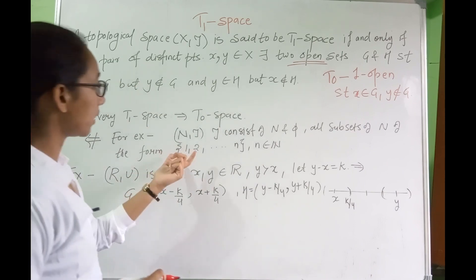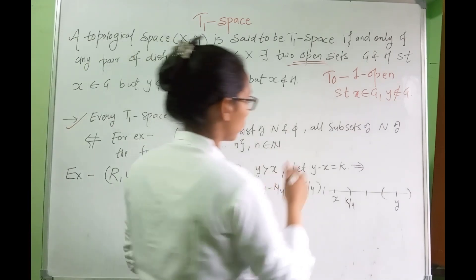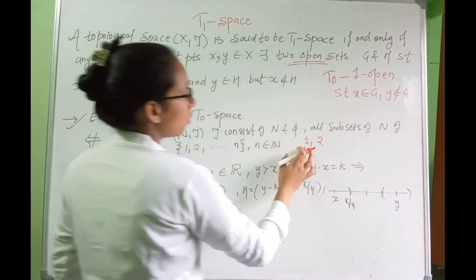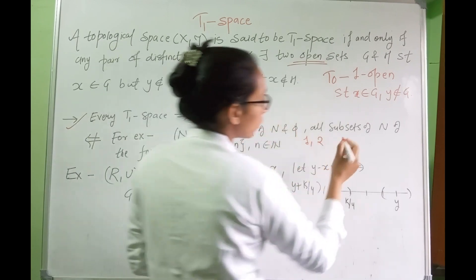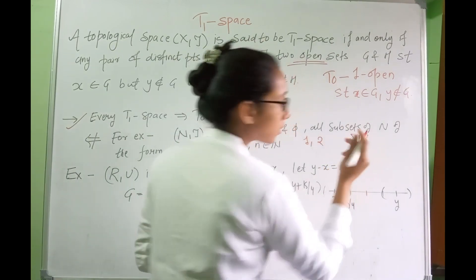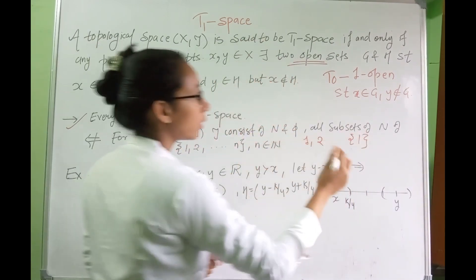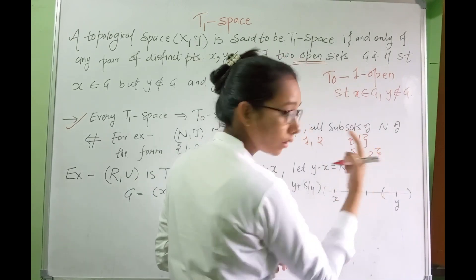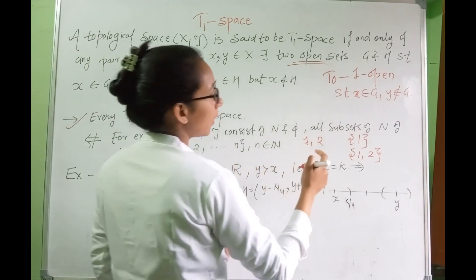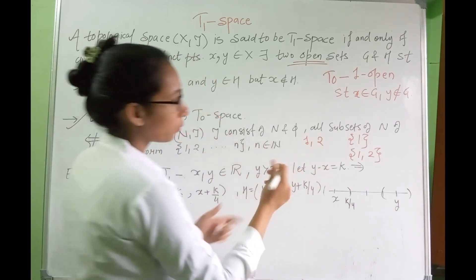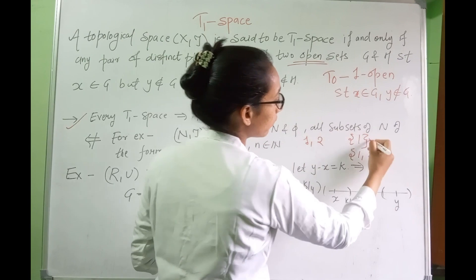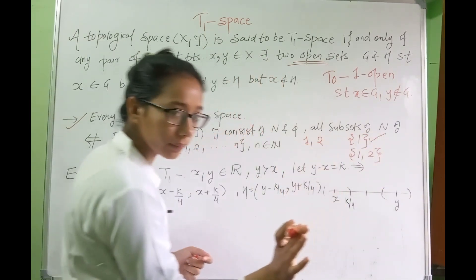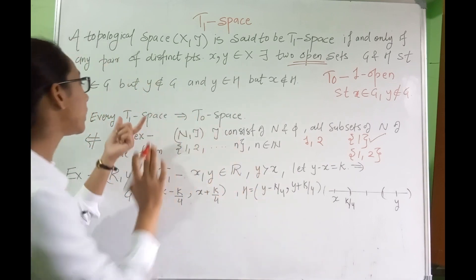This topology is T0 but not T1. Let's see why with points 1 and 2. The open set {1} contains 1 but not 2, so the T0 condition is satisfied. However, for T1, we also need an open set containing 2 but not 1. There is no such open set in this topology — every set containing 2 also contains 1 — so this is not a T1 space.